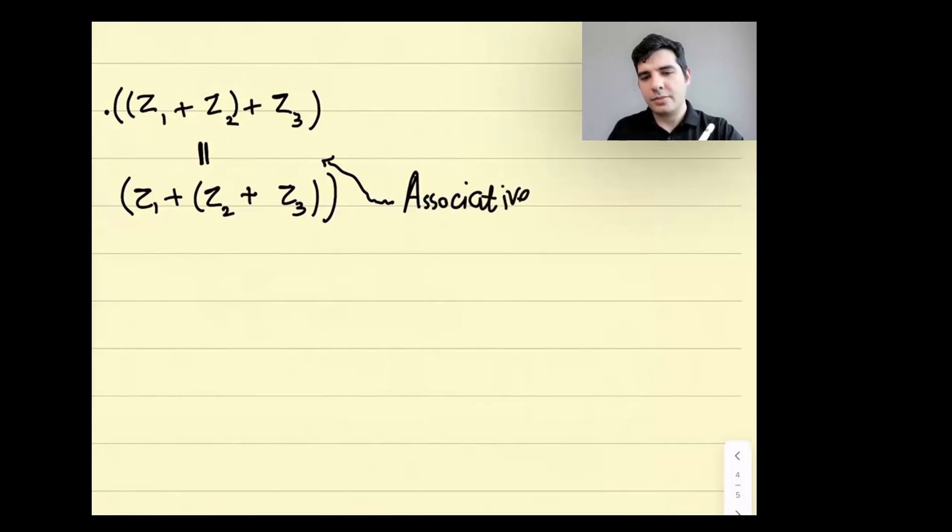The other thing is that there is an identity element for addition. Consider zero as a real number plus i times zero. This is zero as a complex number. If I consider the sum of zero with z for any complex number z, the sum would be z itself. Adding things with zero does not change anything. So zero is the identity for addition.